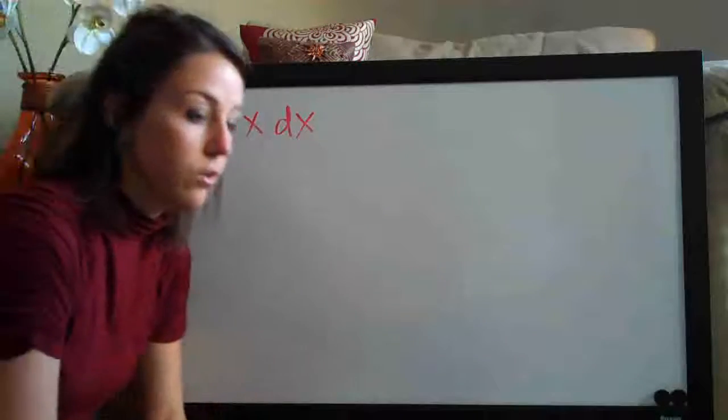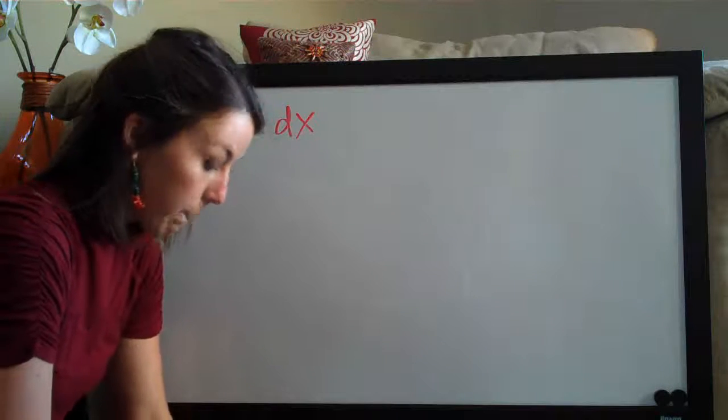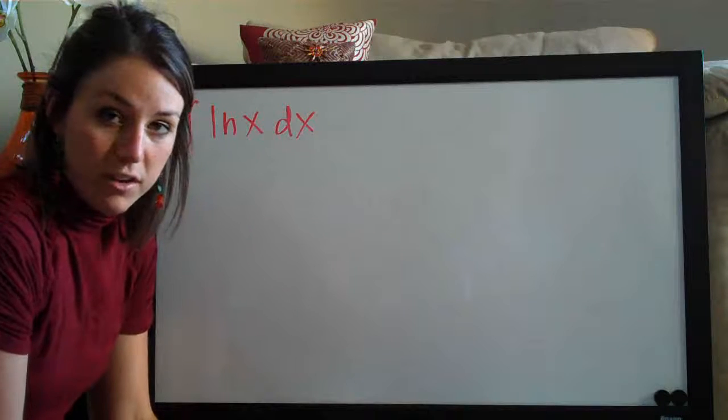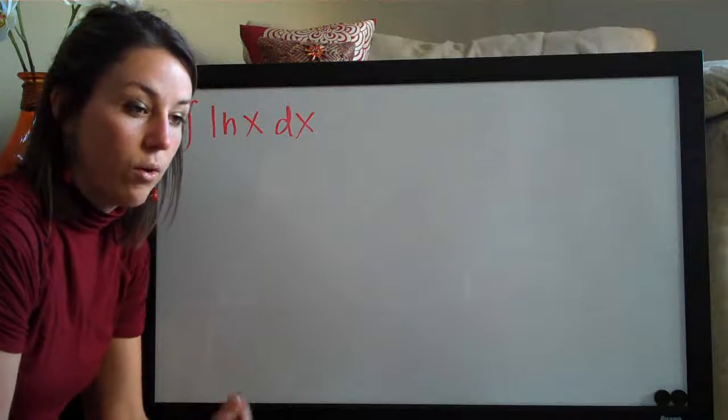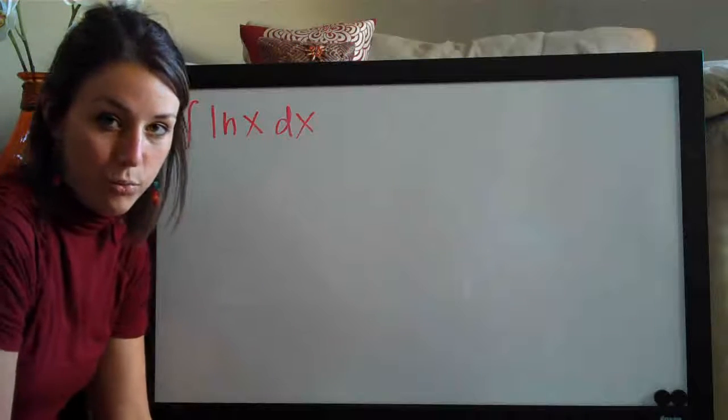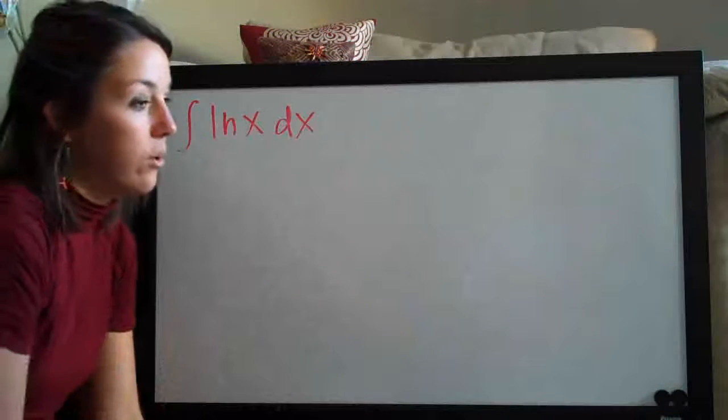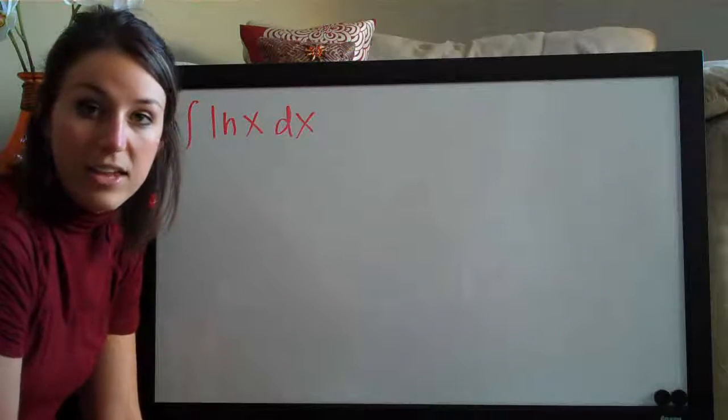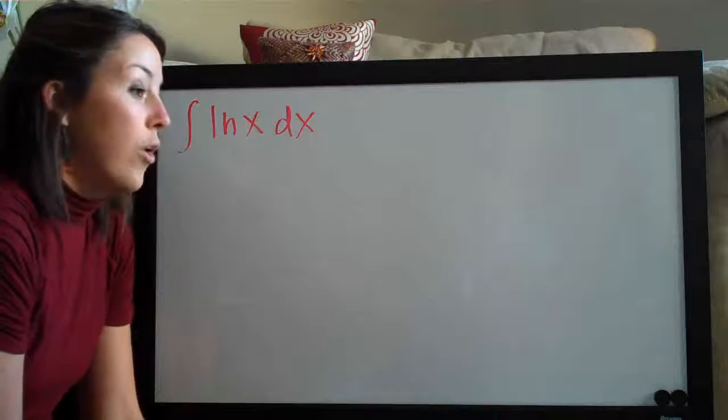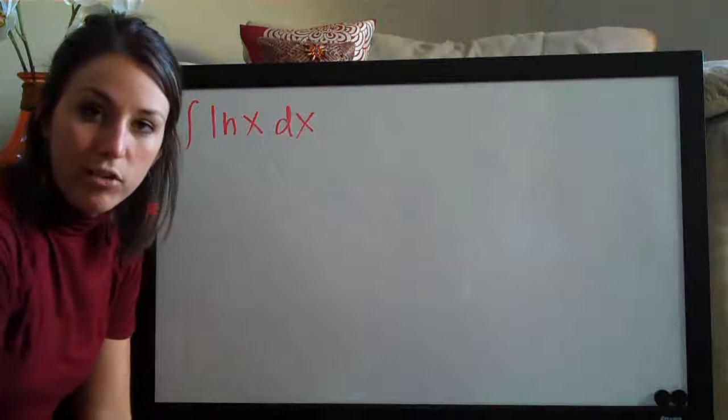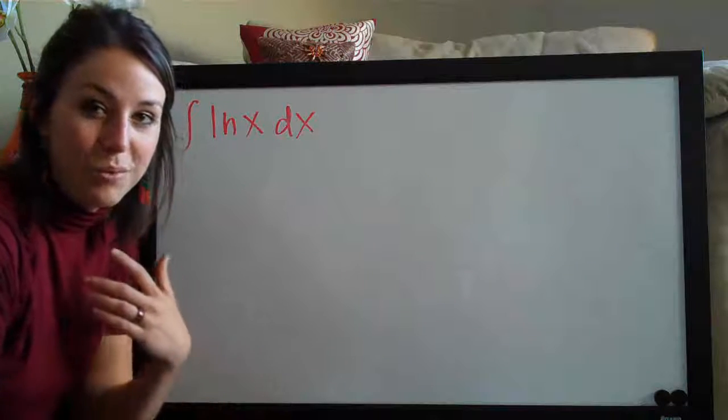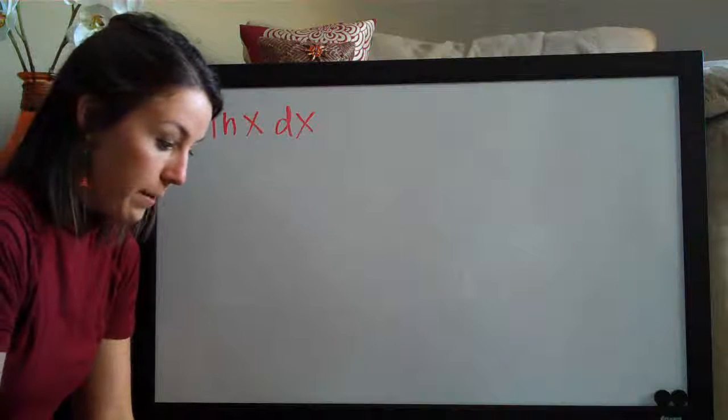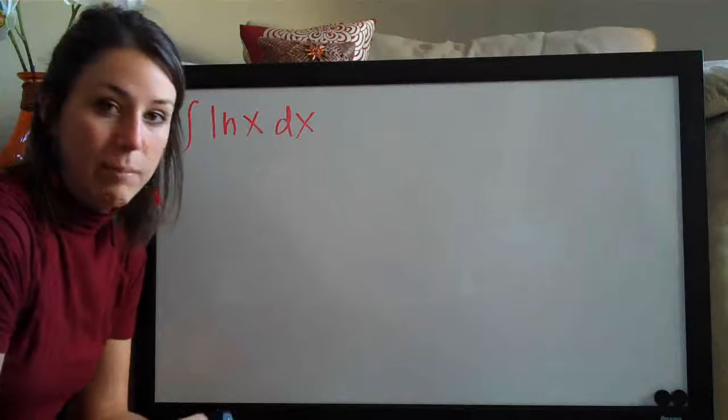This question is interesting simply because ln of x is a really basic function and it almost falls into the category of one of those things where you would just memorize the rule. For example, we know that the derivative of ln of x is one over x and that the integral of one over x is ln of the absolute value of x. Those are things that we memorize or write down on a formula sheet because they're so common that we almost just have them committed to memory.